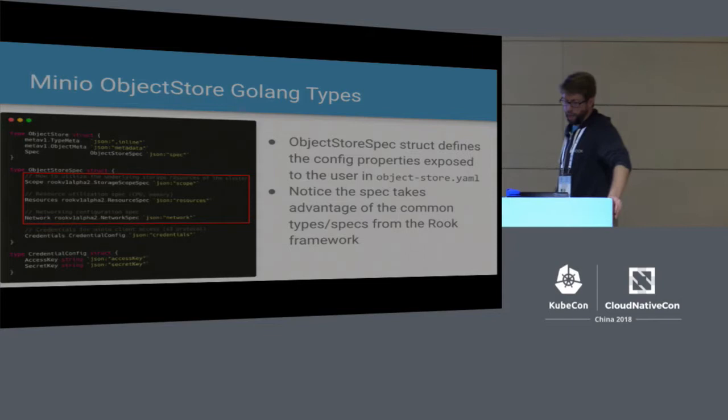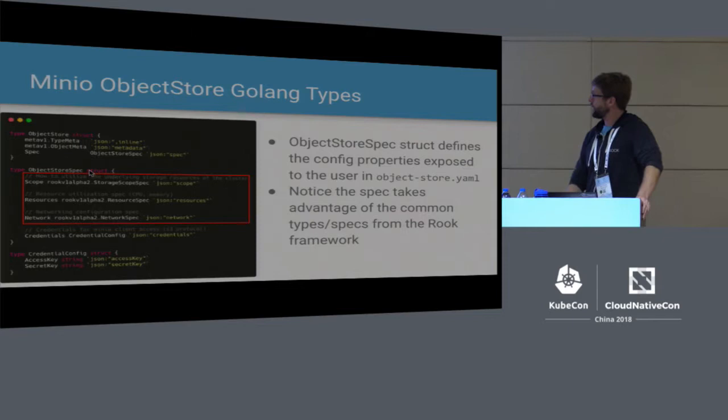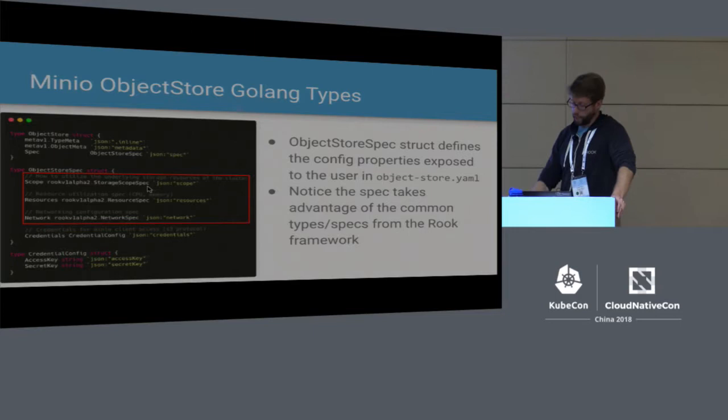Here's what some of the Go code looks like. For the type that is an object store spec, you specify a storage spec, a resource spec, and a network spec inside it, along with those credentials seen earlier. This is basically the Go representation of the YAML we were looking at a couple of slides ago.